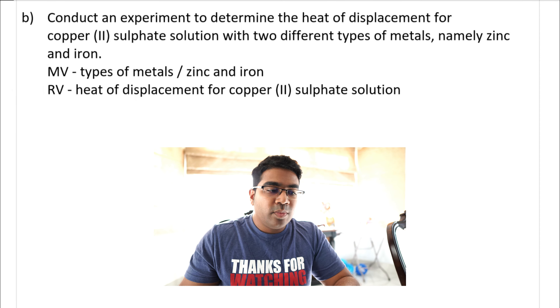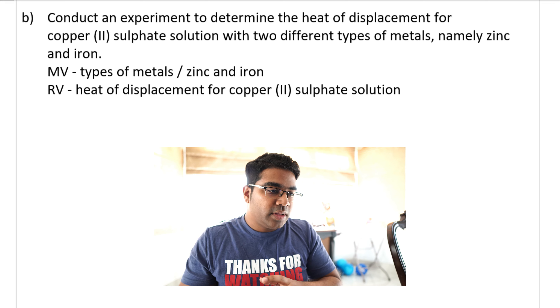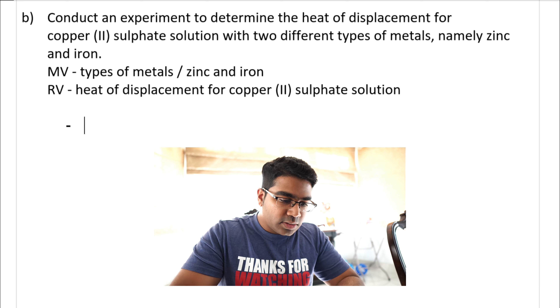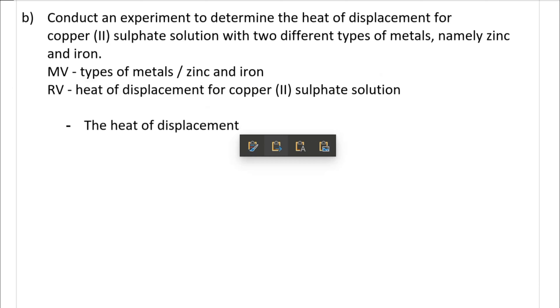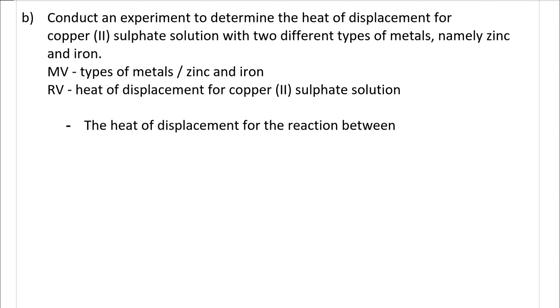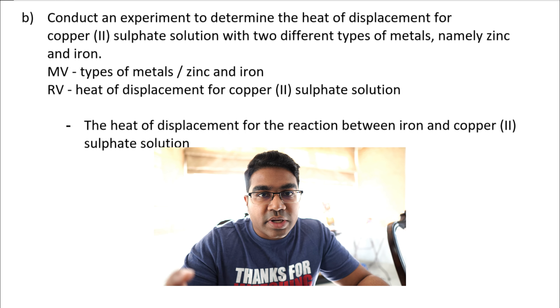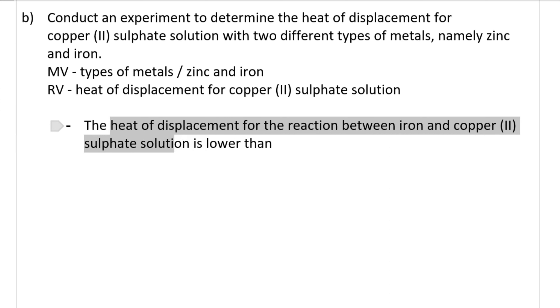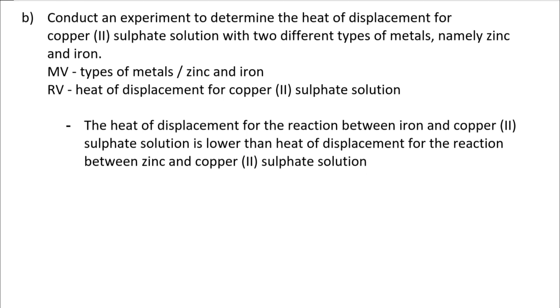For the chemistry example, the MV — types of metals — is qualitative, so we use the conclusion method. We state: 'The heat of displacement for the reaction between iron and copper 2-sulfate solution is lower than the heat of displacement for the reaction between zinc and copper 2-sulfate solution,' because zinc is higher than iron in the electrochemical series, so it produces a greater heat of displacement.